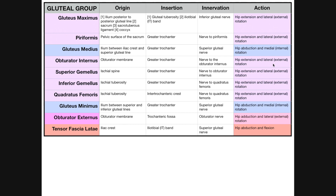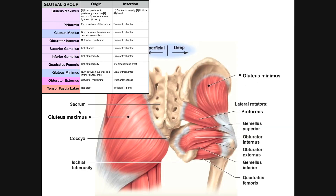For all of these muscles, lateral rotation is the major function — they all work collectively on that. The auxiliary functions, like hip extension for the piriformis, are minor. If we're talking about hip extension, recall the major muscle involved is really the gluteus maximus, and parts of the hamstrings also aid in hip extension. Hip extension is just an auxiliary function of the piriformis.